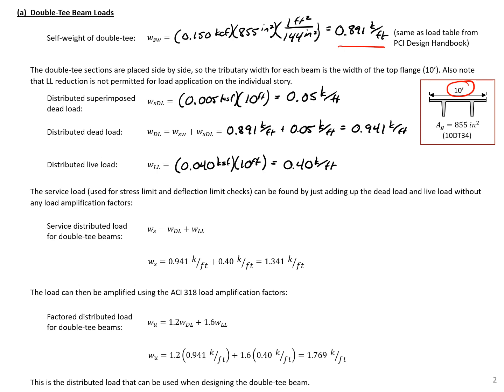We use these loads with our ACI factors. Service load is unfactored — dead load plus live load added together without any load amplification factors. For our factored ultimate load, we apply the ACI load combination: 1.2 times dead load plus 1.6 times live load, giving us an ultimate load of 1.769 kips per foot. These are the service load and ultimate load we would use when designing our double T-beam.